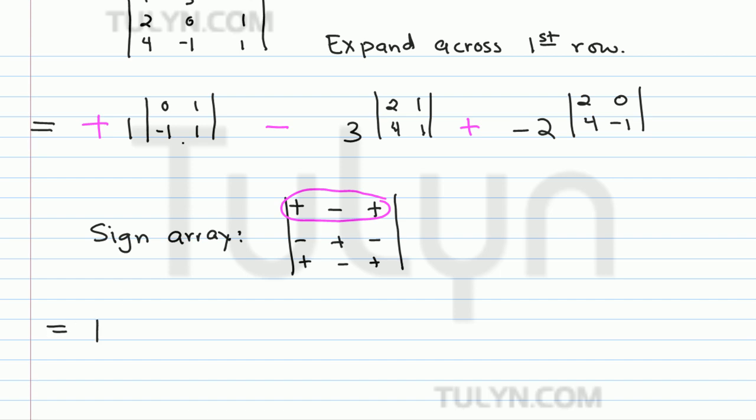We have 1 times the determinant of a 2x2 matrix, which is found by cross multiplying and then subtracting. So it would be 0 times 1, and then negative 1 times 1, and you subtract them. Then for 3, you do the same thing: 2 times 1 minus 4 times 1. Finally, plus negative 2, and then the determinant of this: 2 times negative 1 minus 0 times 4.